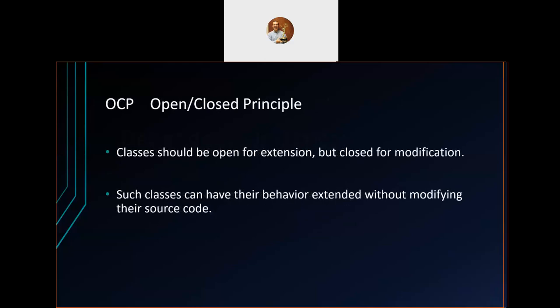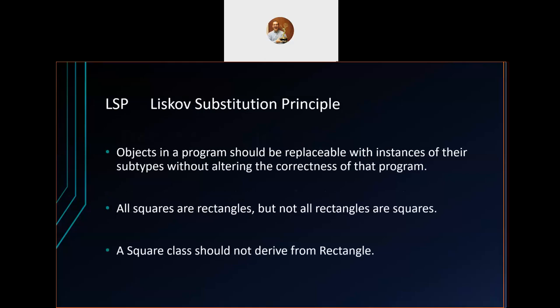The Open/Closed Principle has a somewhat confusing description: classes should be open for extension but closed for modification. The best way to think about it is that if you need to extend a class, you should be able to do so without modifying its source code — for instance, by subclassing it or supplying new implementations of interfaces as arguments to the class's methods.